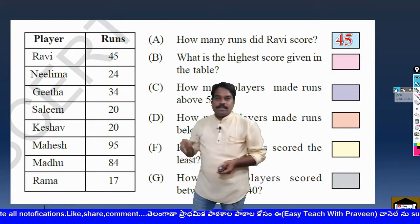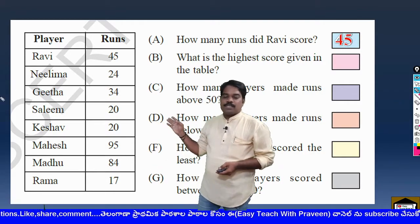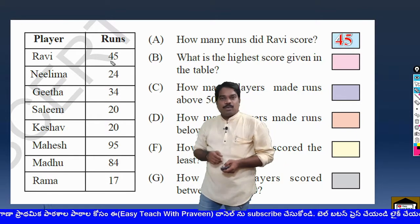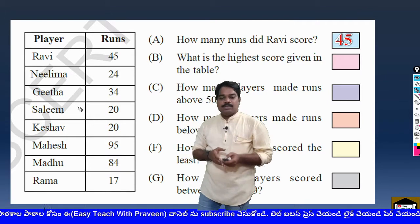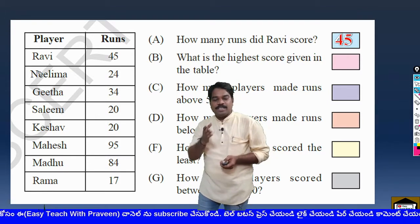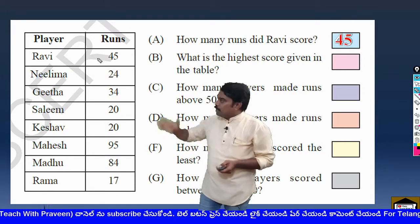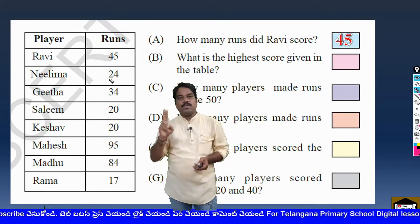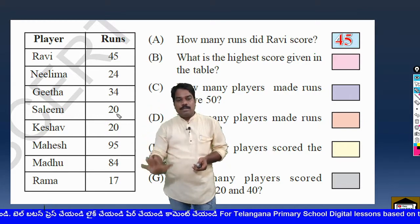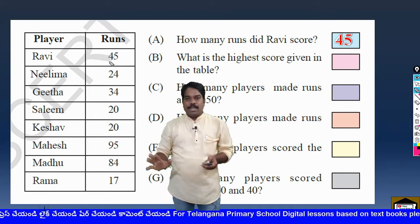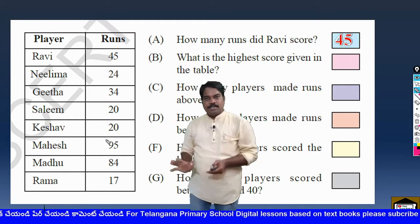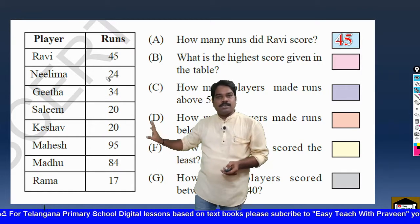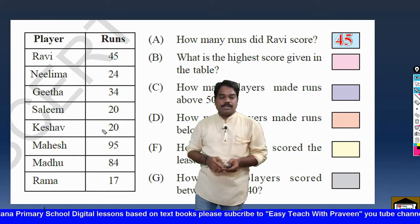Let us look at the second question now: What is the highest score given in the table? If we want to find the highest score, we have to observe how many digits are there in each box. In all the boxes there are two-digit numbers only. So the number of digits in all the numbers is equal — two digits in all numbers.